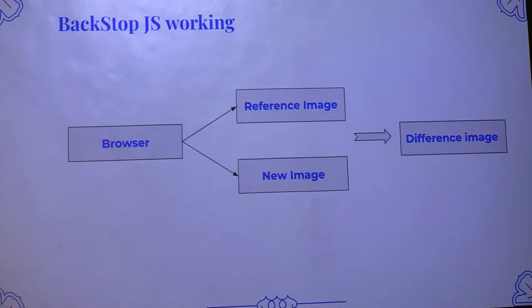In Backstop.js we generally use Chrome Headless as the browser. To launch URLs, click somewhere, or perform any actions on Chrome Headless, we need some libraries. Here we use Puppeteer, which is a Node library that provides an API to perform actions on Chrome Headless. Using Puppeteer we can launch the URL, navigate to pages, click, hover, and input text.